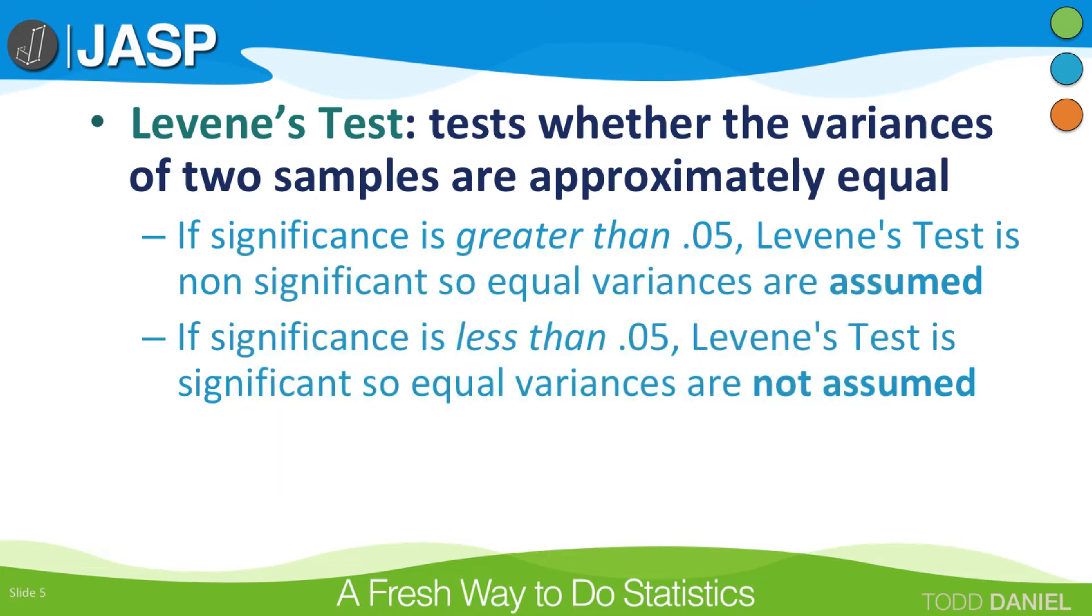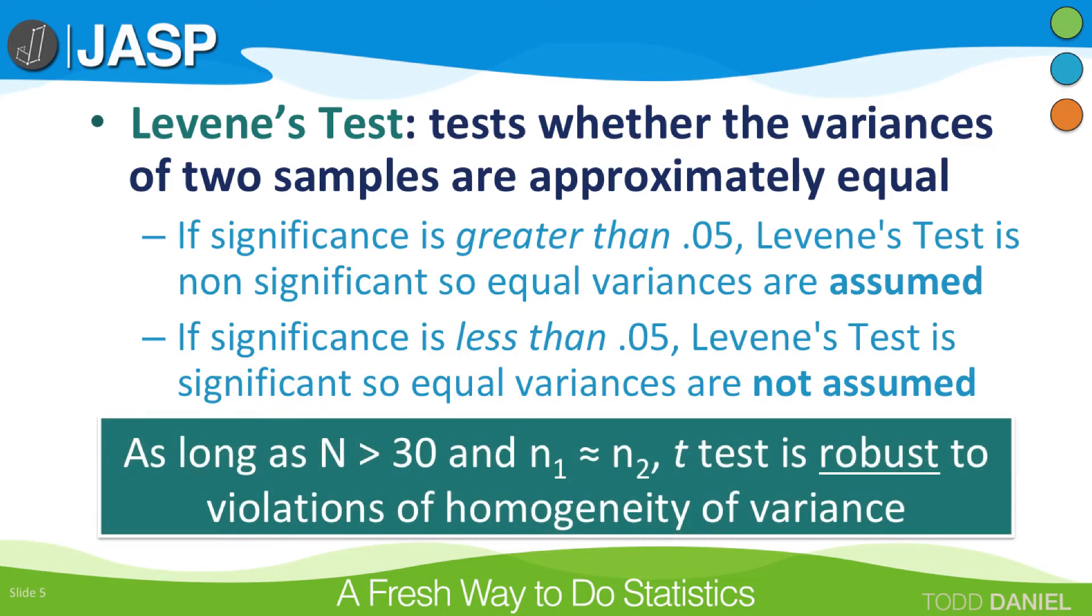In fact, the assumption of this homogeneity of variances is the reason why we prefer large sample sizes, because even if the variances are not homogeneous, the t-test is robust to violations of the homogeneity assumption, meaning that we can still trust the results of the test, but only if the group's sample sizes are larger than 30, and the group sizes are equal.